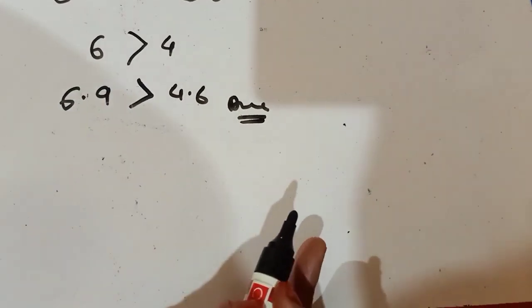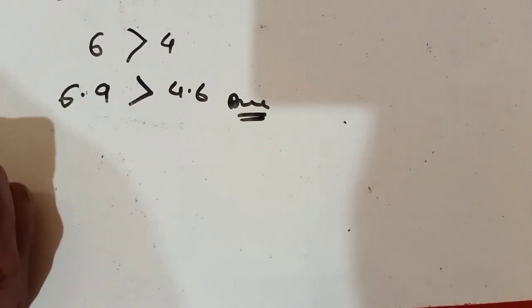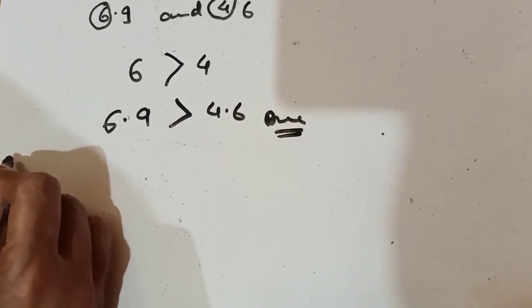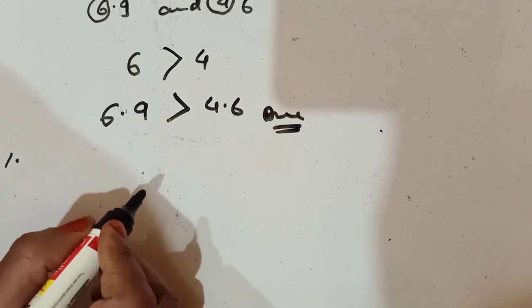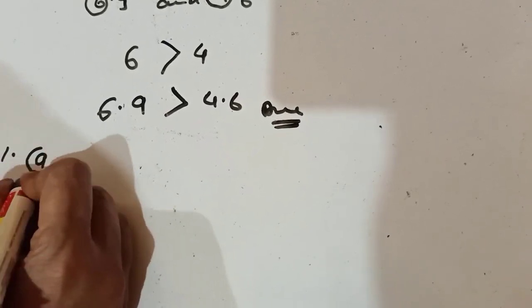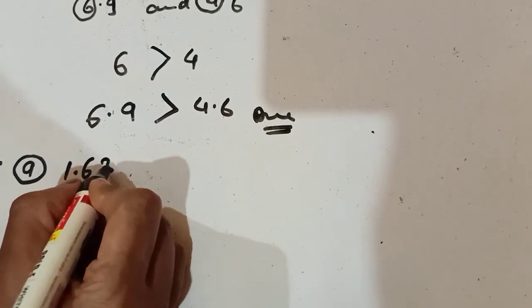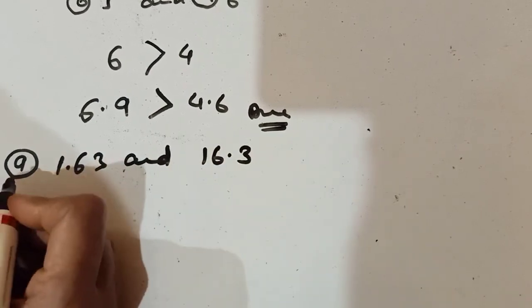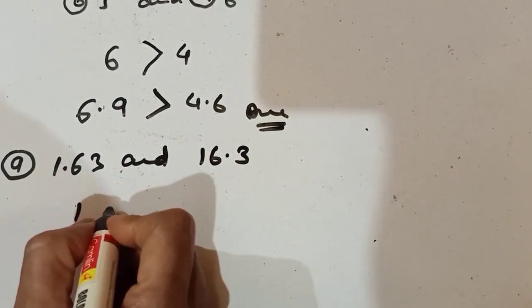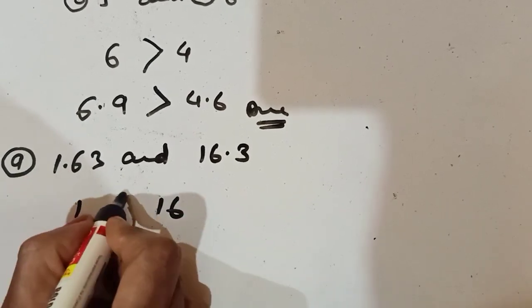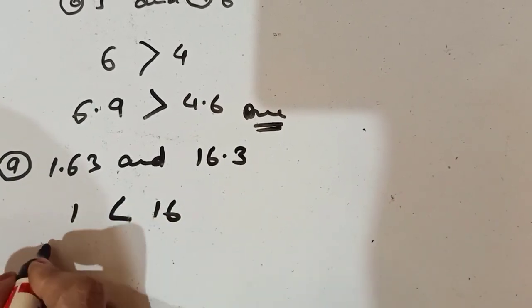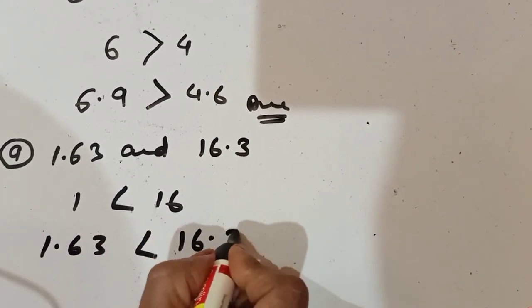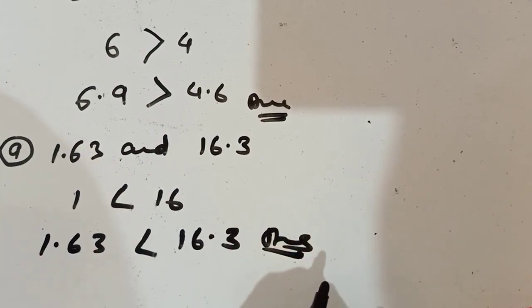So without wasting my time, dealing with exercise 8.3. Look carefully. In exercise 8.3 question number 1 I am taking question number 1A: 1.63 and 16.3. So see the question, 1 and 16. Which one is greater? 16 is greater. It is very simple children. 1.63 and 16.3. So it is answer of this question.